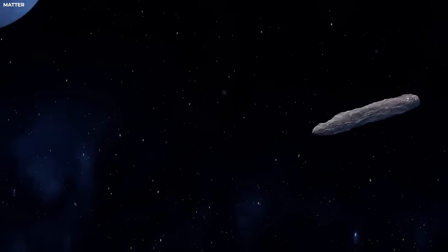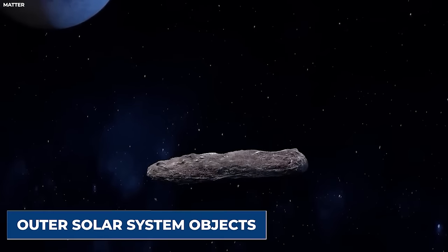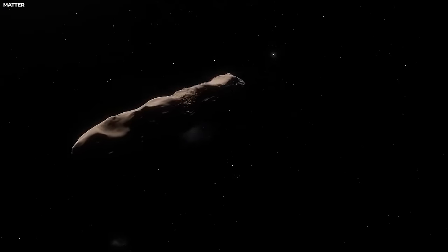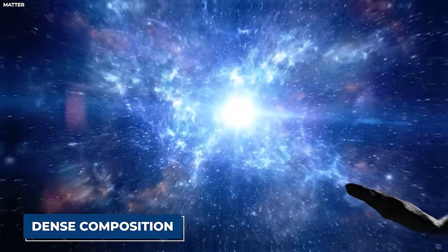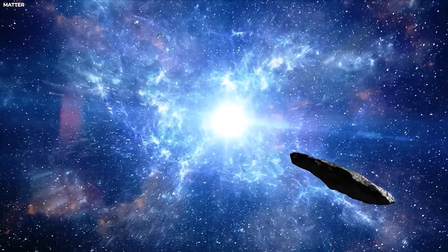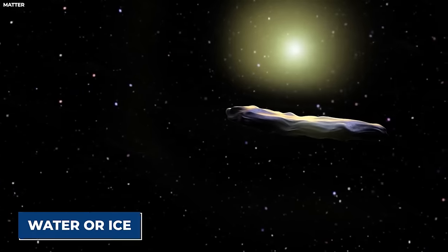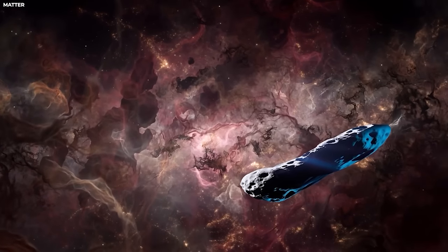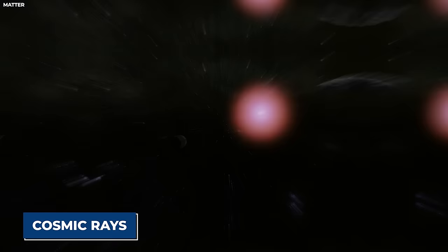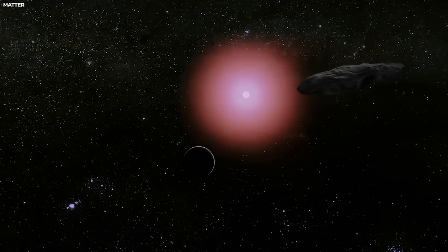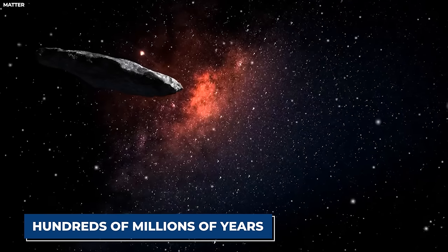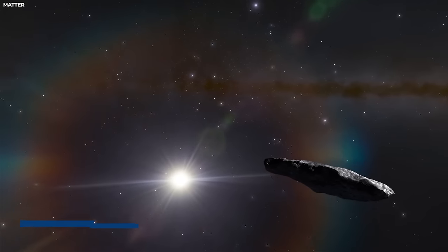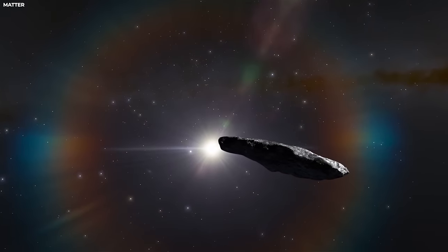Its surface's reddish tint suggests eons of irradiation from cosmic rays. These characteristics imply that Oumuamua has traversed the Milky Way for hundreds of millions of years, detached from any stellar system, before its serendipitous rendezvous with our own.